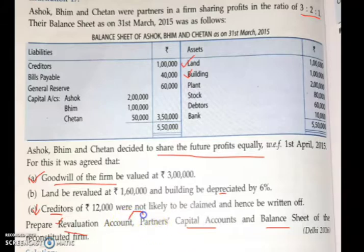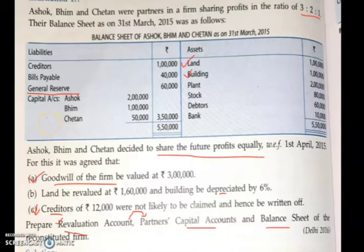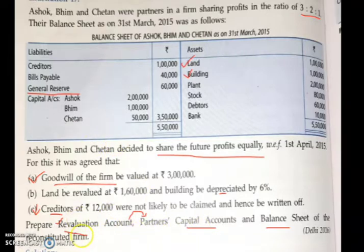And that will be transferred to the next account, that is partners' capital account. Before starting the actual working — preparation of revaluation, partners' capital, and balance sheet — what you have to do is first underline the old ratio and the new ratio. After that, you have to see if there is any item which you are supposed to distribute to the partners. In this question, you can see general reserve is an item to be distributed to the partners in their old profit sharing ratio.